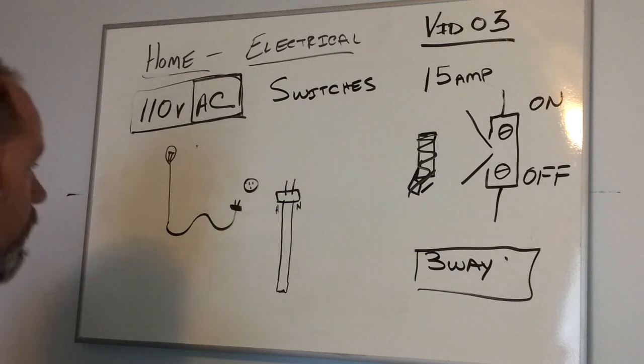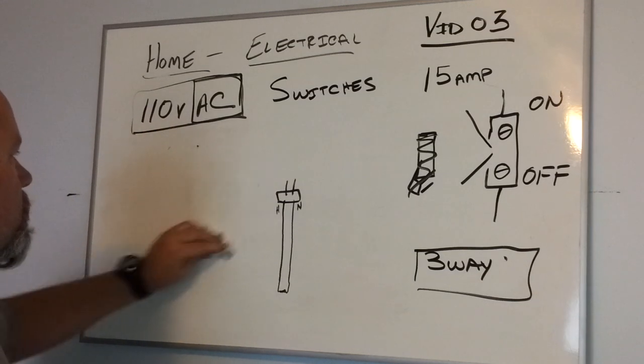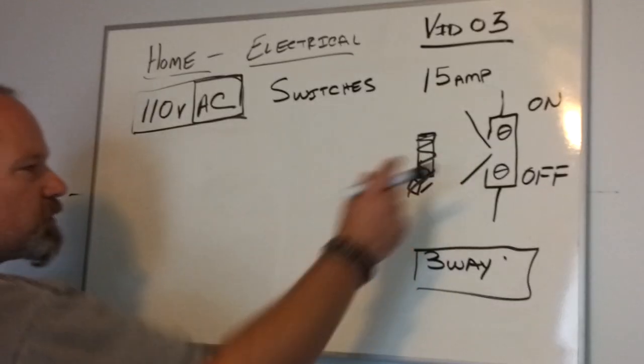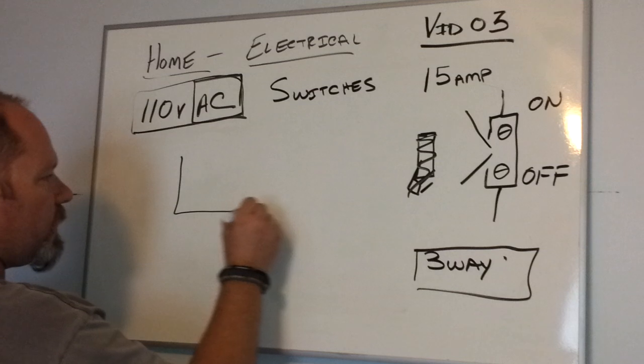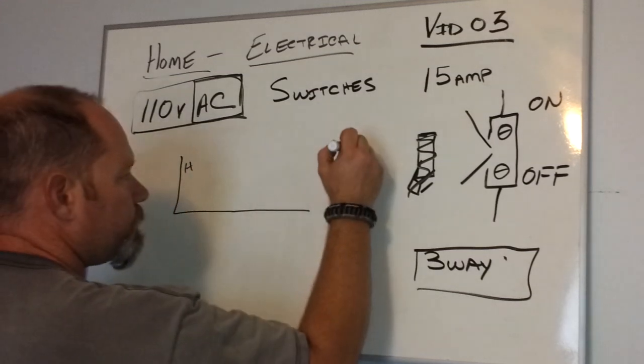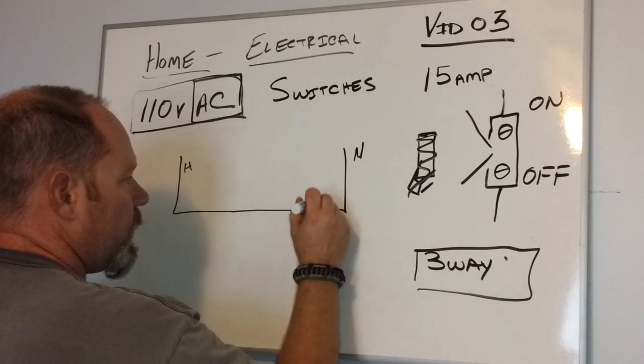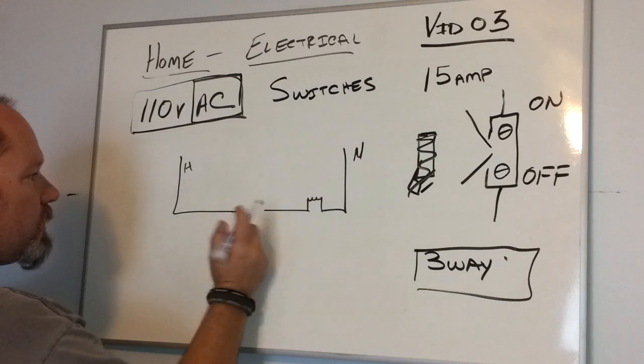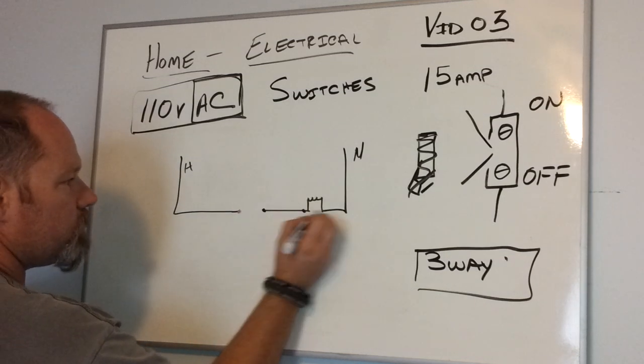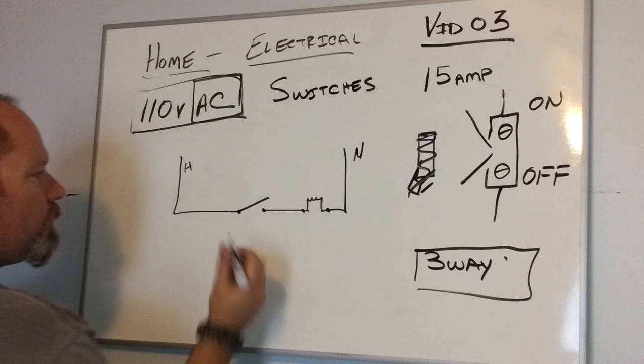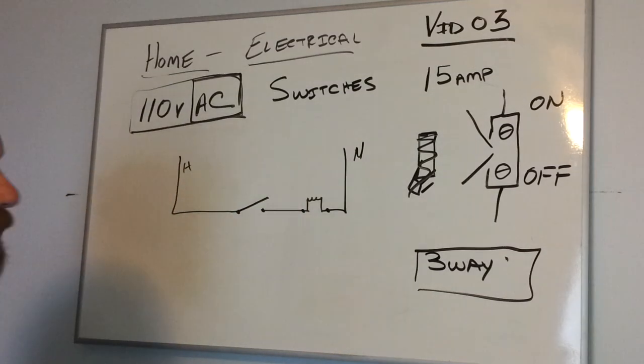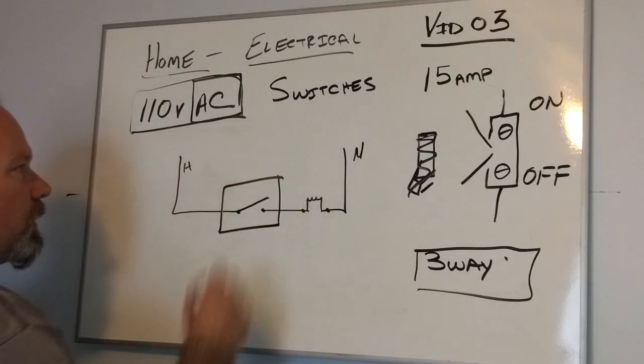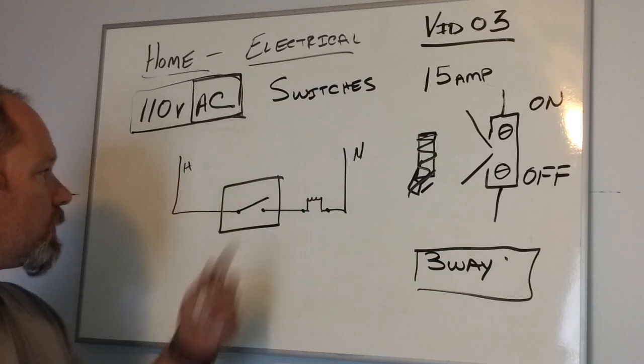So we'll get into more circuits and things on upcoming videos, but I just wanted to cover switches real quick. Switches do nothing more than open the path of electricity from the hot and your neutral, and some type of load. This would indicate that it would be on all the time, and then we go ahead and take this out, put a terminal stop here, and we open the circuit, and electricity cannot flow through there. That concludes our video on switches.